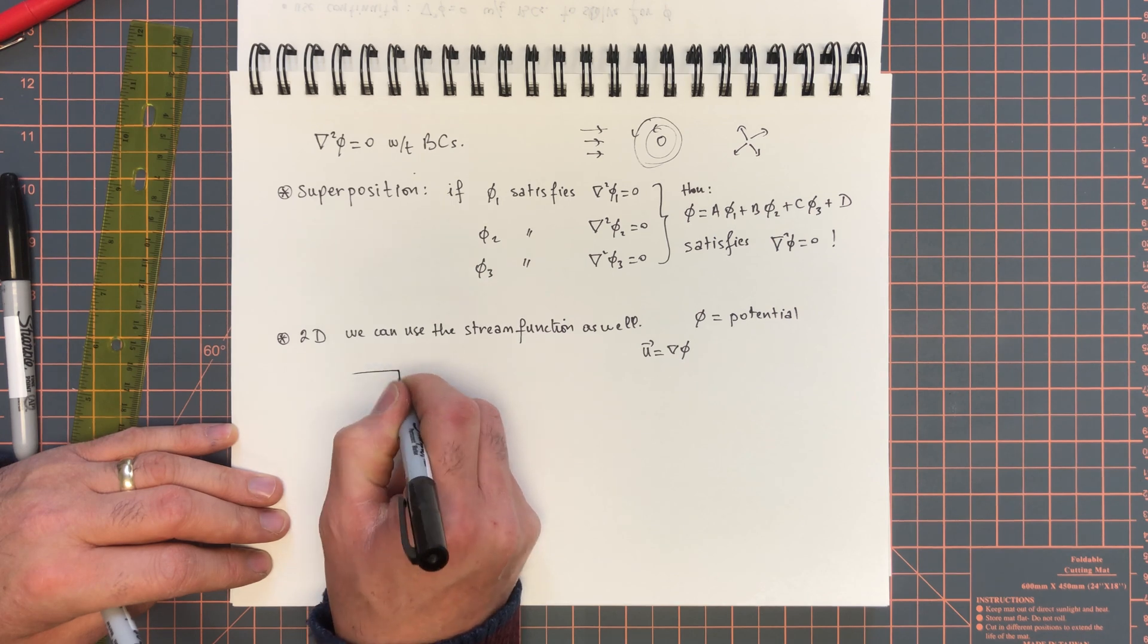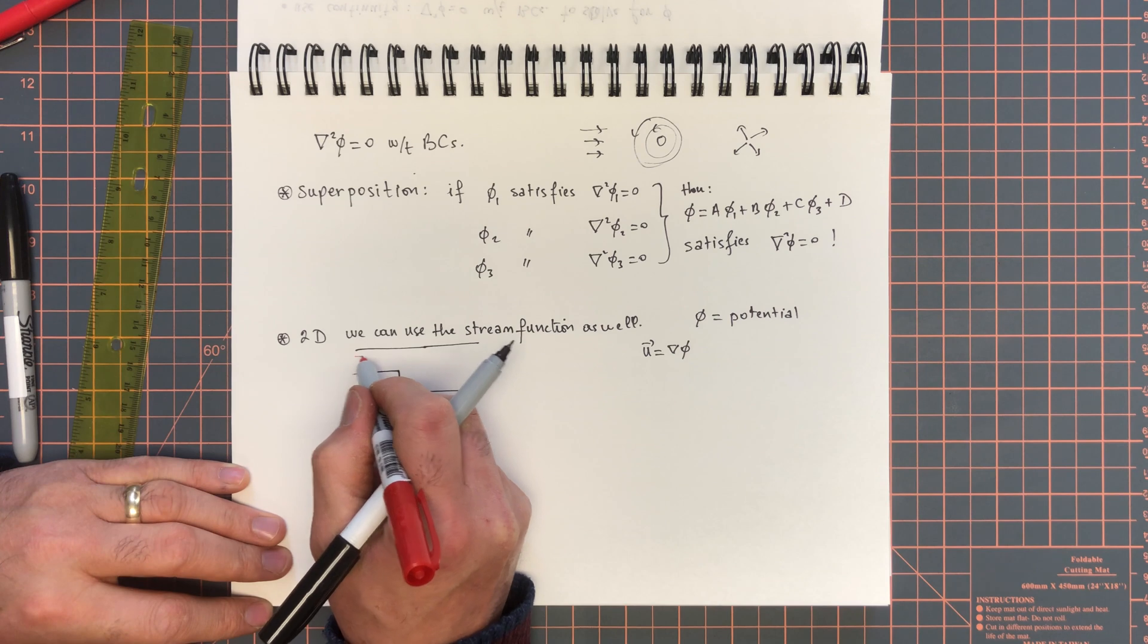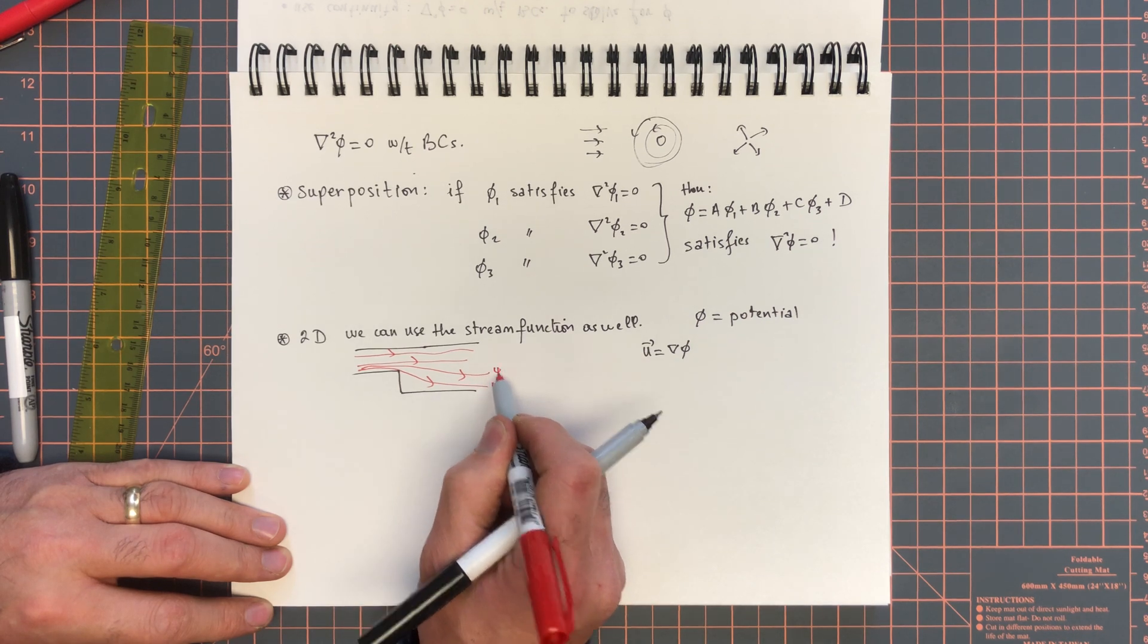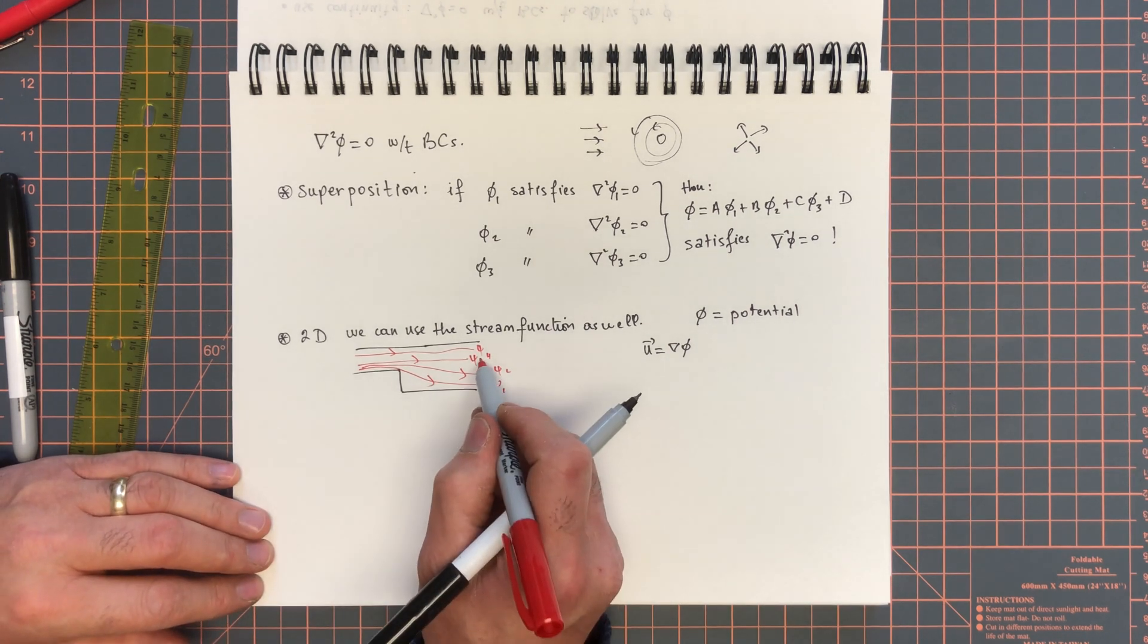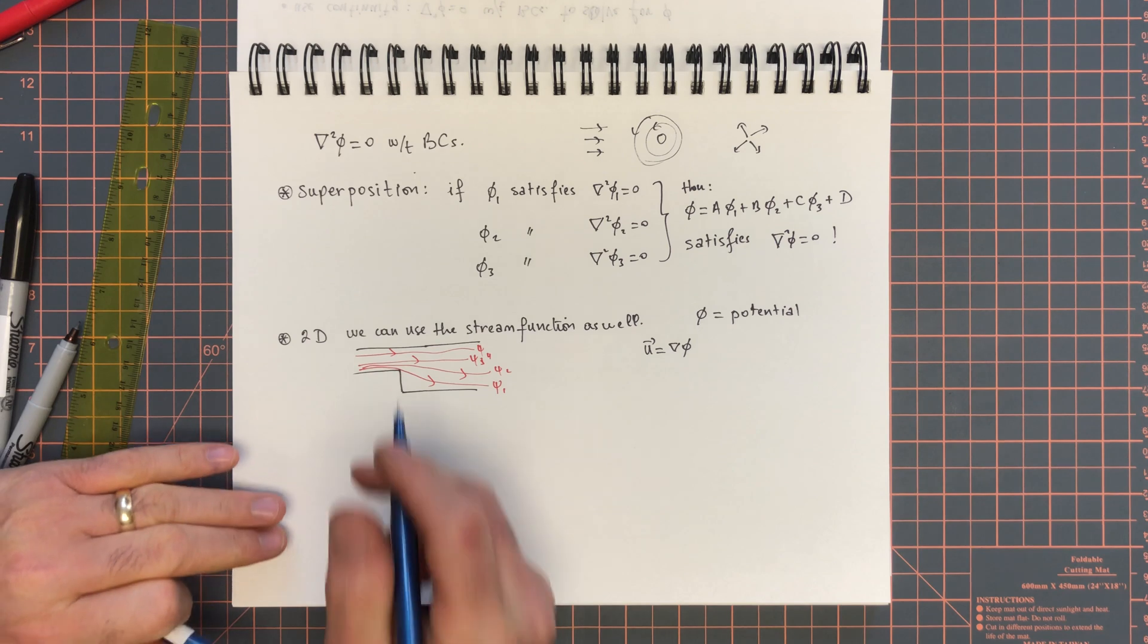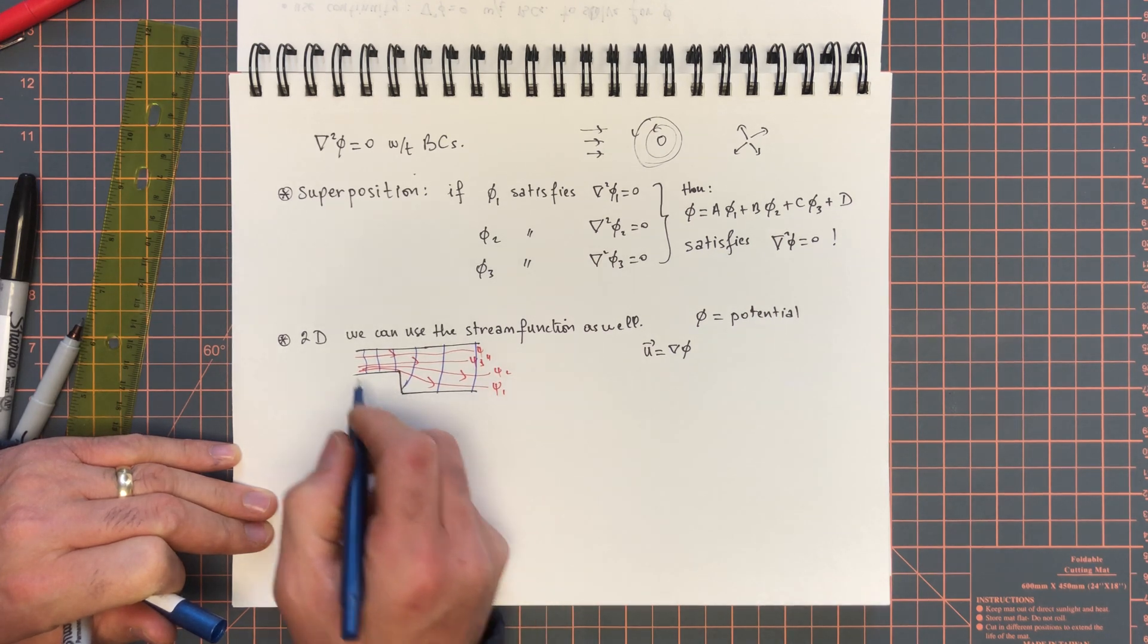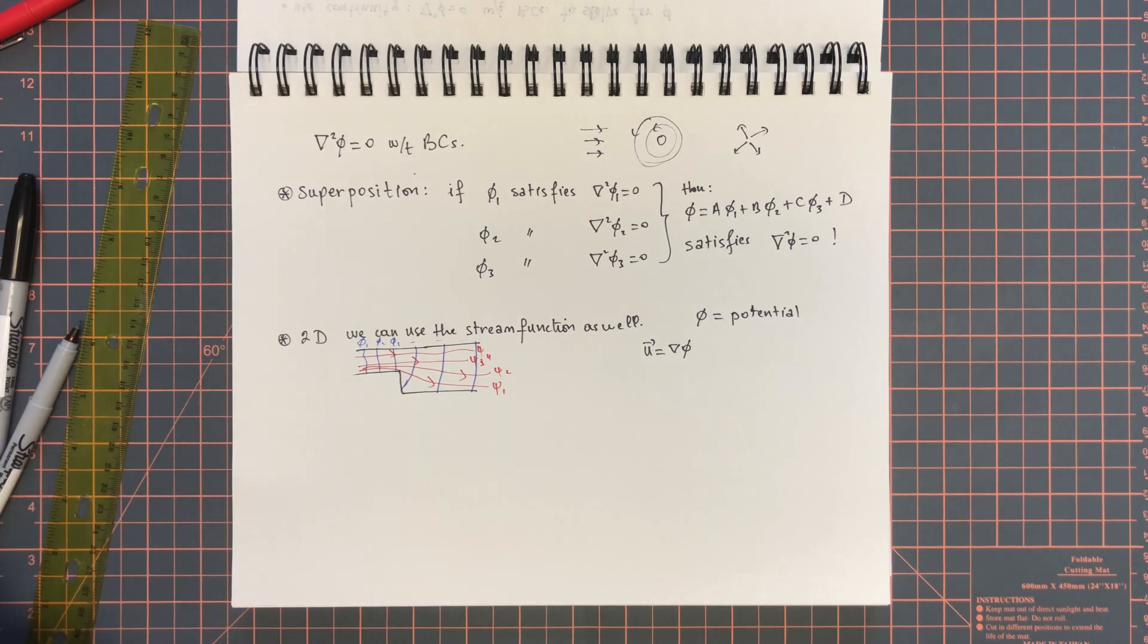what you would typically draw and what any person would draw are kind of streamlines, right? Where there are values for psi over here, 1, 2, 3, 4, etc. However, how would you draw the velocity potential? It turns out that the velocity potential in two dimensions is perpendicular to the stream function. So, phi 1, phi 2, phi 3, and so on. That's what it looks like.